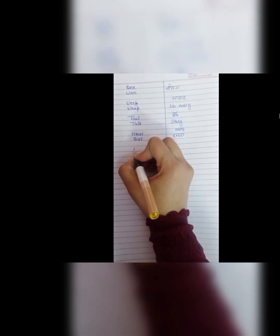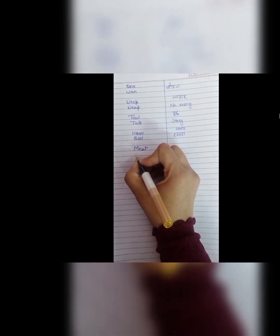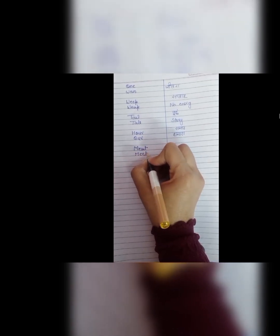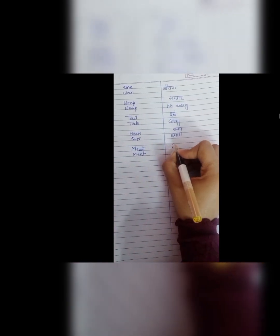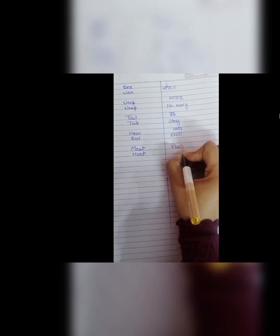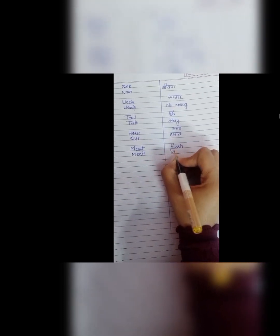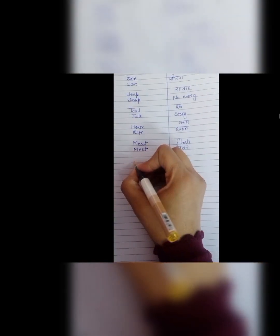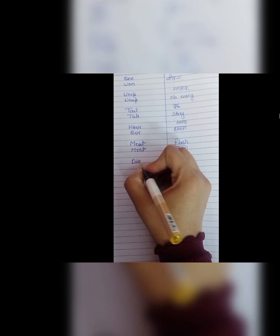Next is meat and meet. M, E, A, T, meat. Iska meaning hoota hai flesh. Means jho ghost hoota hai. Meat jho hoota hai. Jho hum log khátate hai. Woh wala meat. M, E, A, T, meat. And M, E, E, T, meet ka means hoota hai milna. Jiasse we have to meet this person. Or I have a meeting with this person.